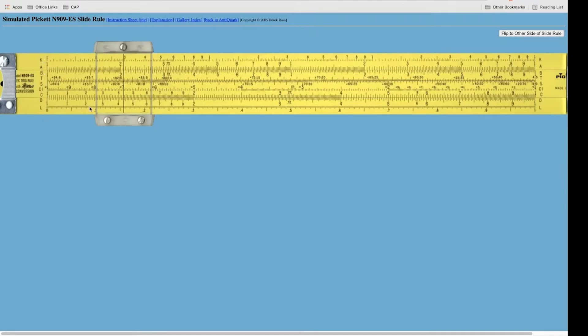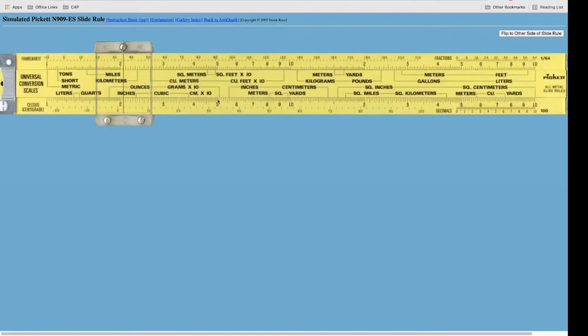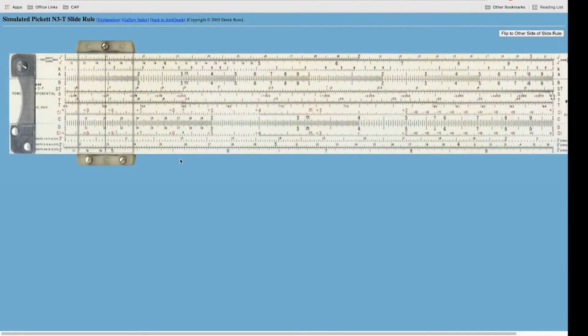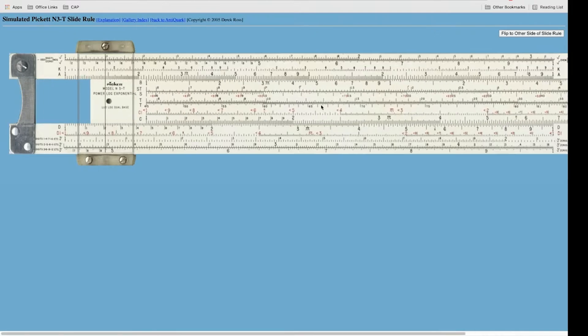Now, you can also flip it over. And this is very similar to what we had on that first slide rule, which is pretty much a dedicated slide rule just to do these conversions. Here's the Picket N3, and that's the one that I use. Notice it doesn't have that what they call eye saver yellow. This is a more traditional cream-colored slide rule. But it works the same way.